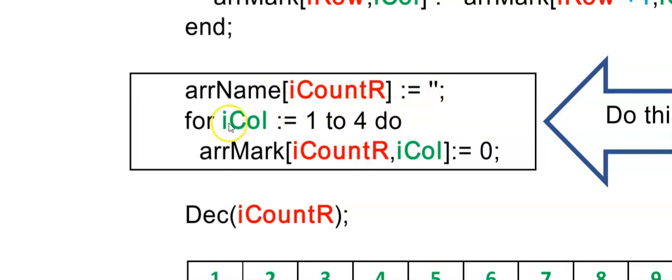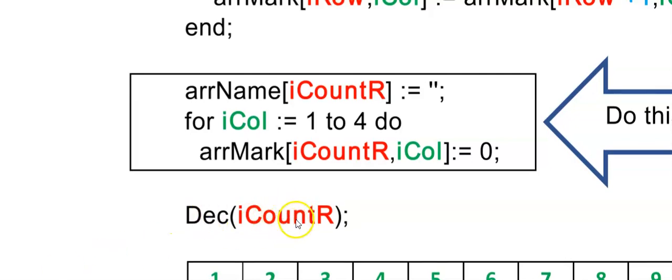So in the example that I showed you just now, it was position 6. I'm emptying the string and I'm just setting all the values to 0 of my array mark. And now because I have one row less, I need to take one off my row counter. So iCountR is now one value smaller. By changing this variable here, I will be able to use my display procedure to display my updated array again.